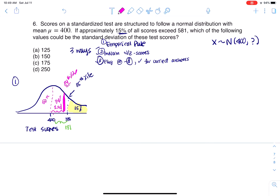So now I'm only going from the 84th to the 85th. So this gap here between 400 and 581, it's pretty close to one standard deviation. So that means the standard deviation has got to be close to 181, but slightly less than it. And that gets me to answer C. So if I use the empirical rule, I can get to answer C that way.